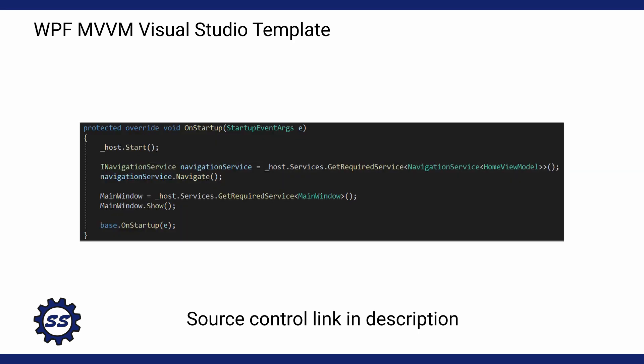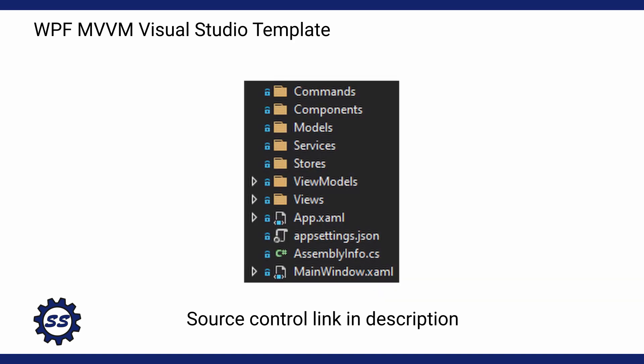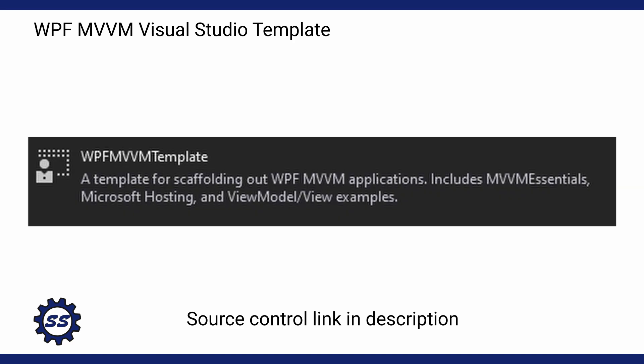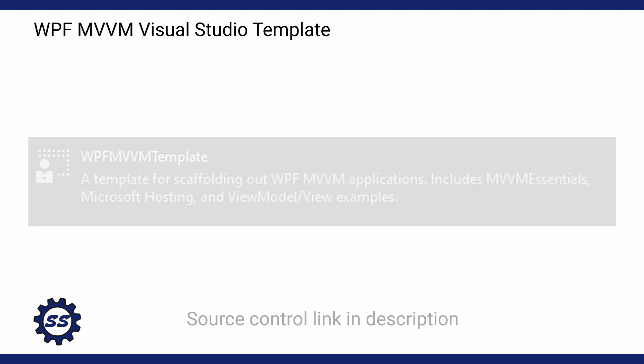I need to set up my App.xaml.cs, scaffold that out to show my main window, and I also like to create some folders for models, views, view models, etc. So that being said, I'm going to create a custom WPF MVVM project template so that I don't have to scaffold all this out every single time.